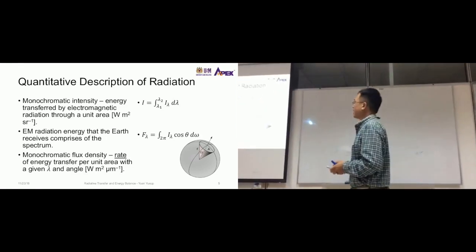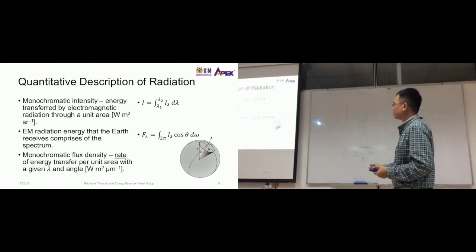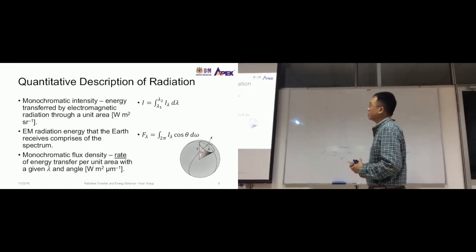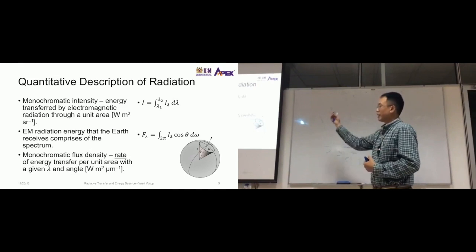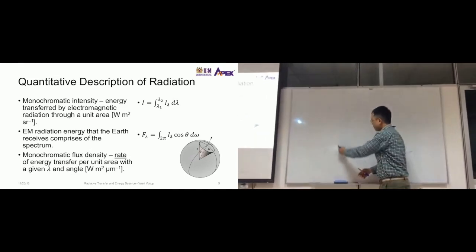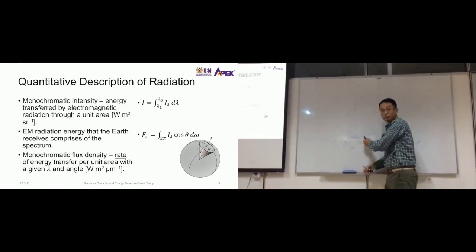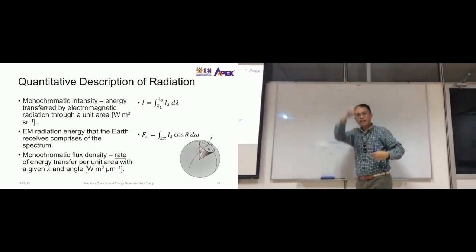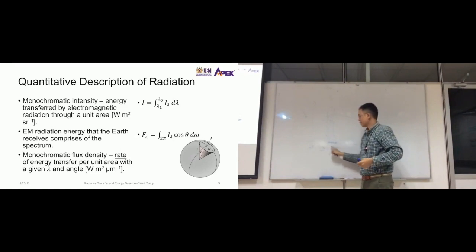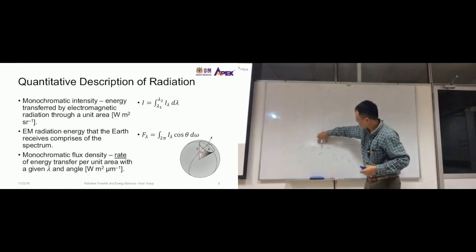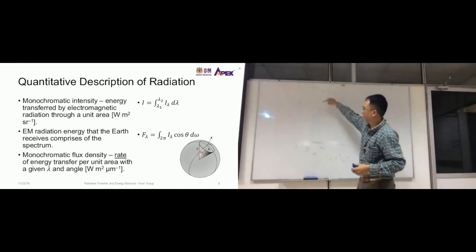That's what it means — it's not that difficult to understand, and you just need to know the concept. You don't have to solve the integration analytically. If you have the different I values, you just add them up — it's just a list of I values — multiplied by the difference between the two wavelengths for monochromatic intensity.